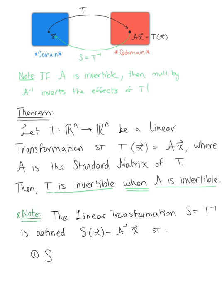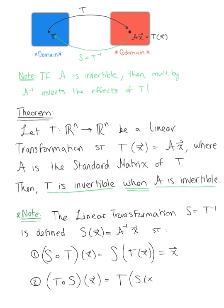We have the composition of the linear transformations s and t of vector x is equivalent to vector x, and the reverse holds true as well. So the composition of the transformation t of s of vector x is also equal to vector x.